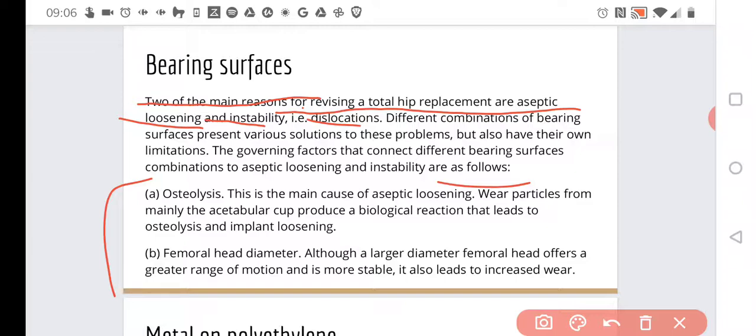Osteolysis. This is the main cause of aseptic loosening. Wear particles from the acetabular cup produce a biological reaction that leads to osteolysis and implant loosening. Osteolysis is the breakdown of the bone. In case of inflammation, this breakdown can happen. If the acetabular cup creates some wear particles, those wear particles will lead to inflammation. Usually these wear particles are because the cup is from polymer, so the polymer generally can wear.